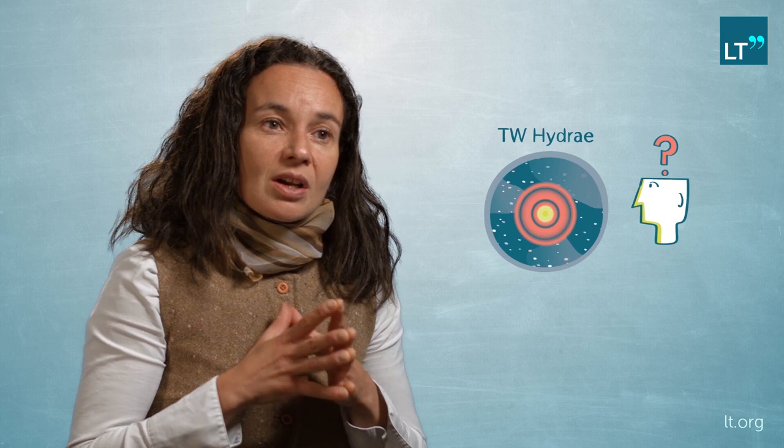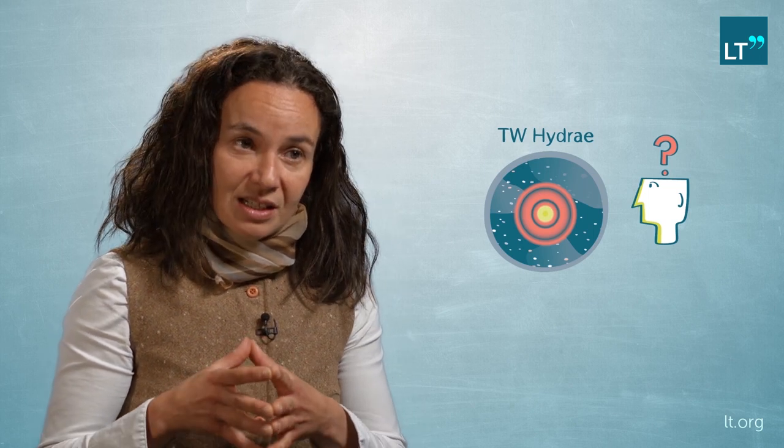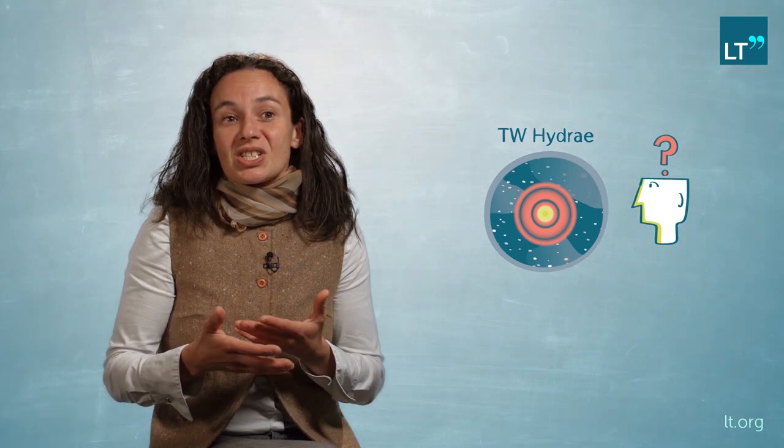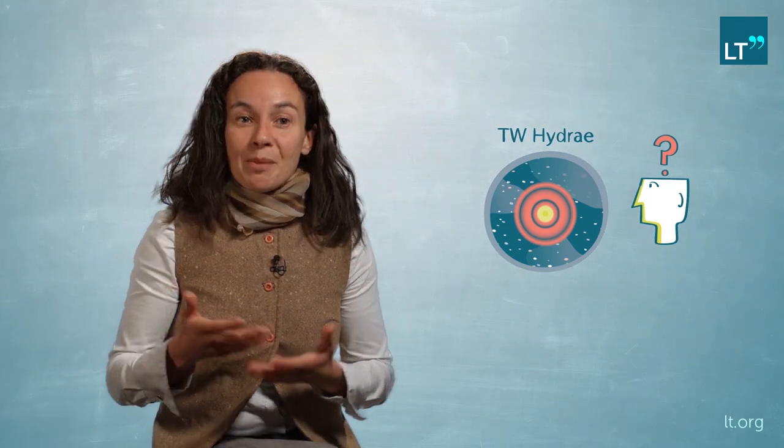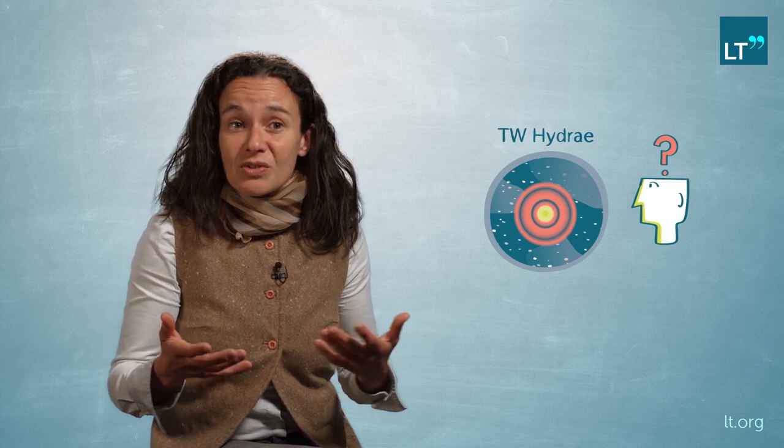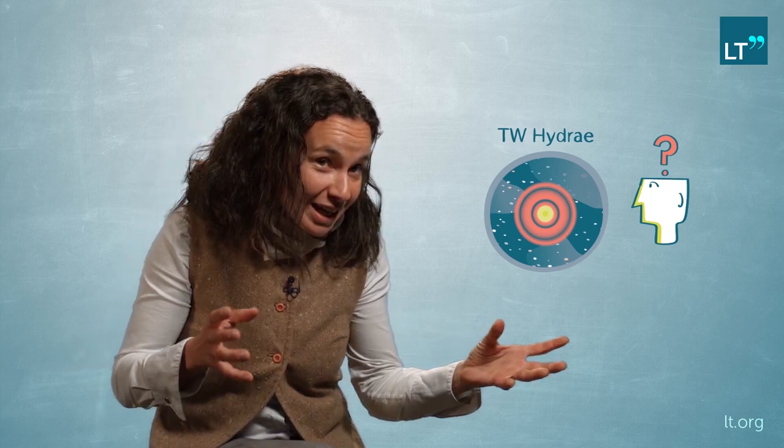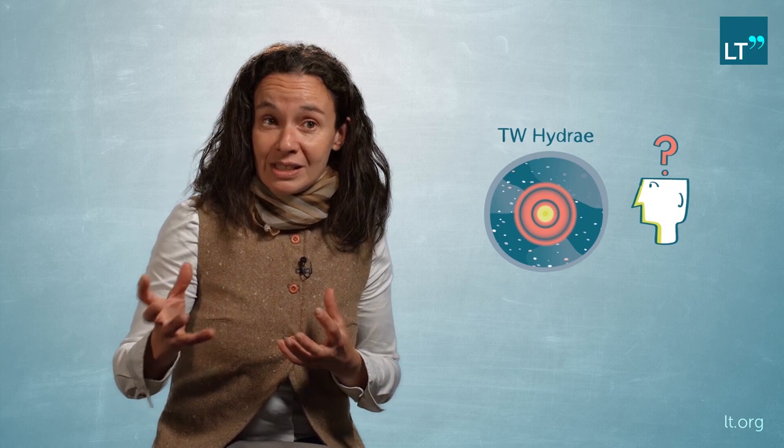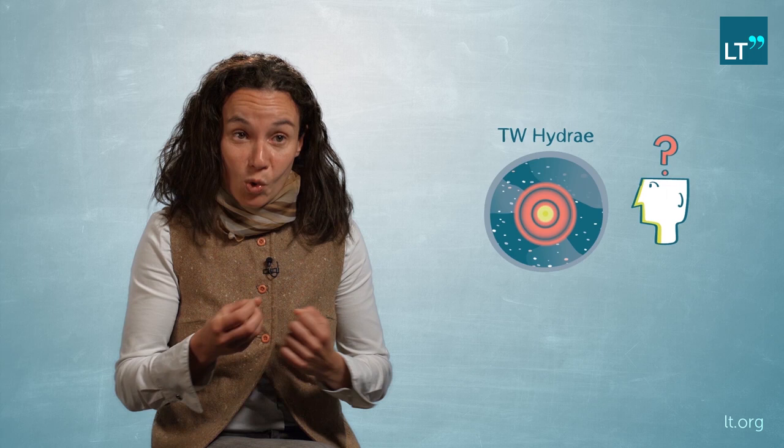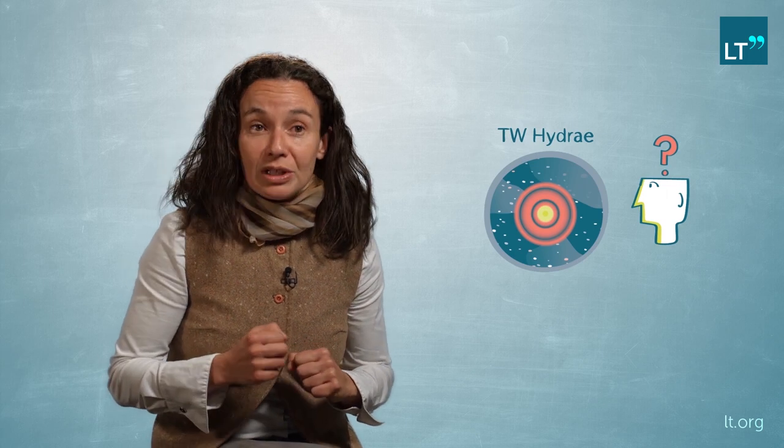We want to try and understand whether TW Hydra is a disk that is on the verge of dispersal. So disks don't just live forever. At some point, the material in the disk is gone. This spells obviously the end for the formation of giant planets and it very much influences the further evolution of terrestrial planets or planetary cores that may have already been formed.